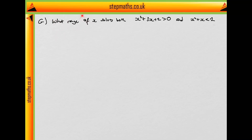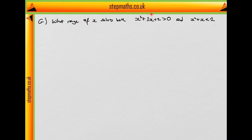Question G asks: for what range of x solves both x squared plus 3x plus 2 strictly greater than 0 and x squared plus x strictly greater than 2? Let's start by factoring them so we can sketch the regions down.